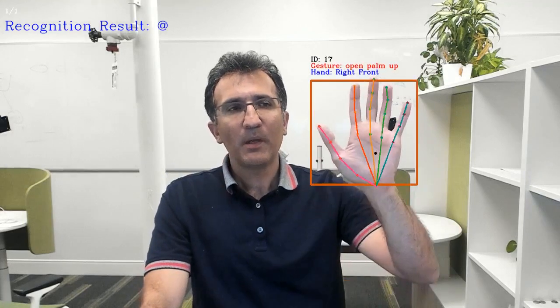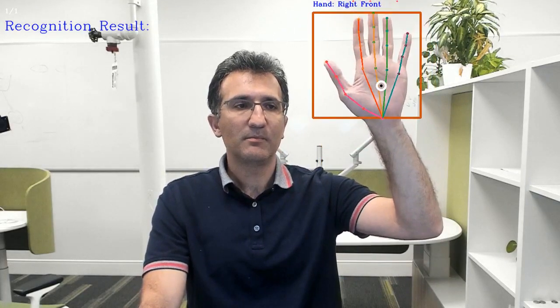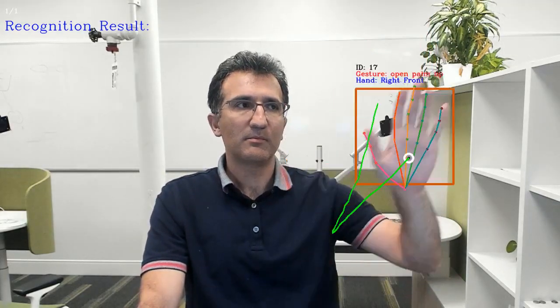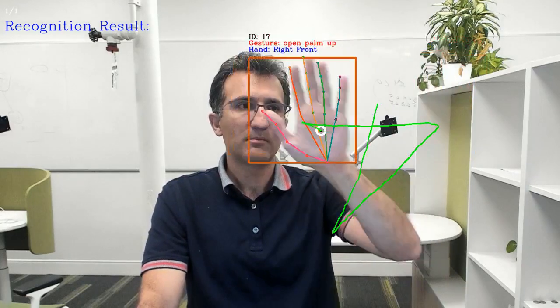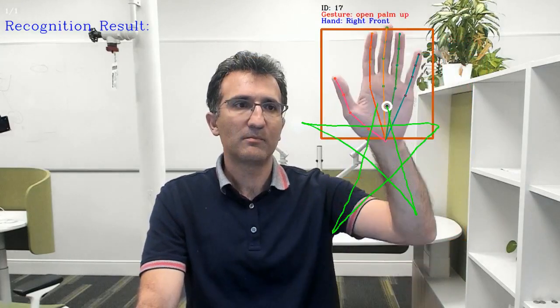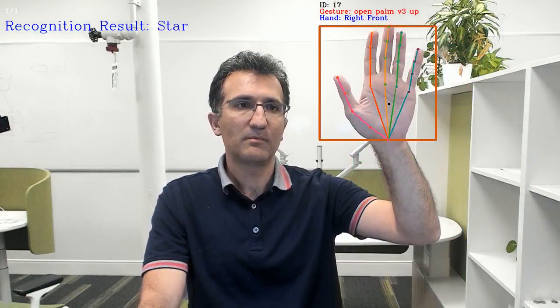Here is a star. We can add different gestures to the same category — for example, here is a star made from the left corner.